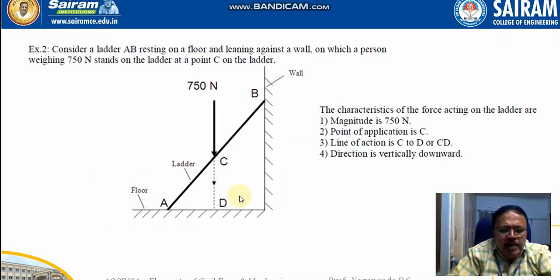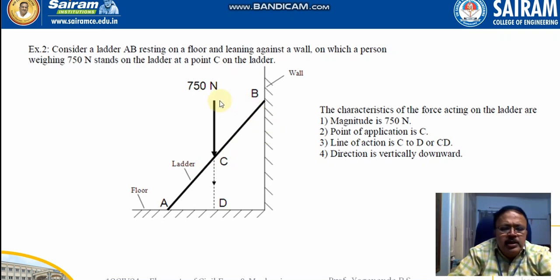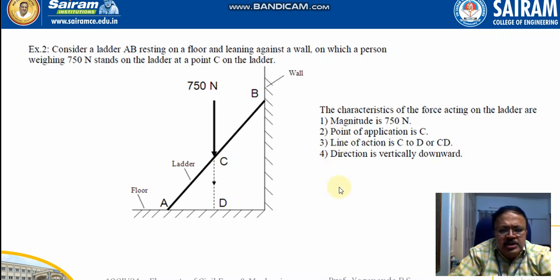In the next example, a ladder A-B leans against a wall and rests on the floor at some angle of inclination. A person weighing 750 Newtons is standing at point C. The characteristics of this force are: magnitude is 750 Newtons, point of application is C, line of action is vertical labeled C-D, and since the weight is attracted toward the earth due to gravity, the direction is vertically downwards. This is how we specify the characteristics of any force. Thank you, friends.